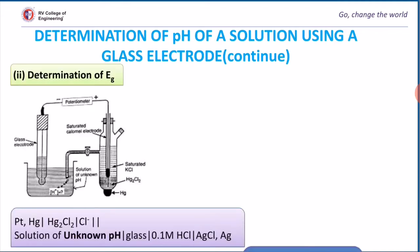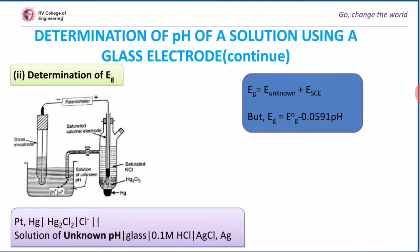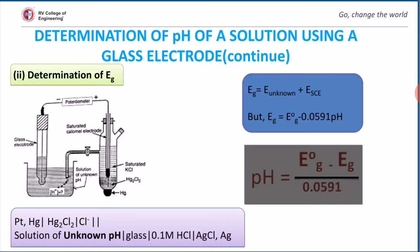In the second step, we will determine the EG value by dipping the glass electrode in unknown pH. Experimental setup is same but instead of known pH, we are using unknown pH. Notice the change in representation of the experimental setup. This time the EMF is called E unknown because unknown pH is used and we can calculate the EG value using this relation.